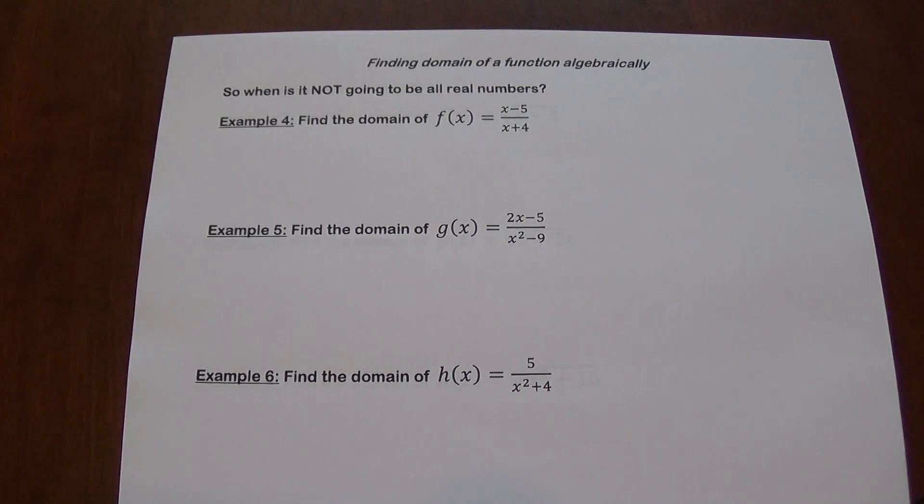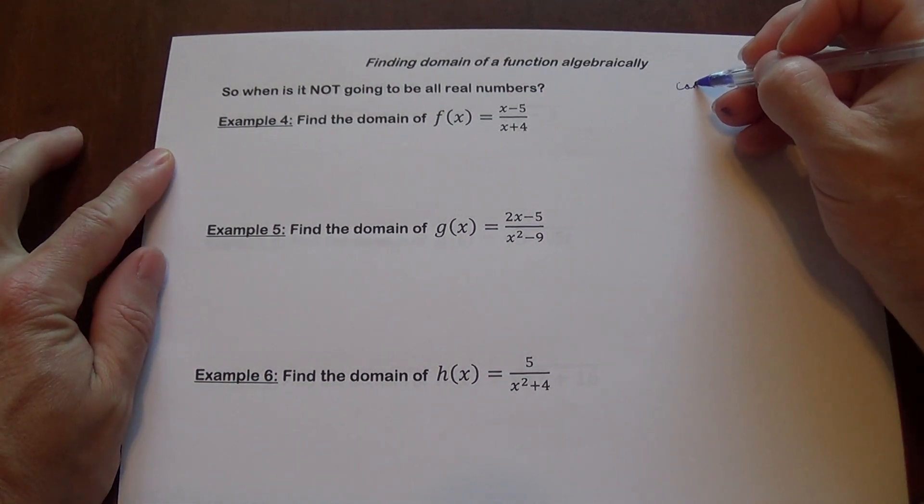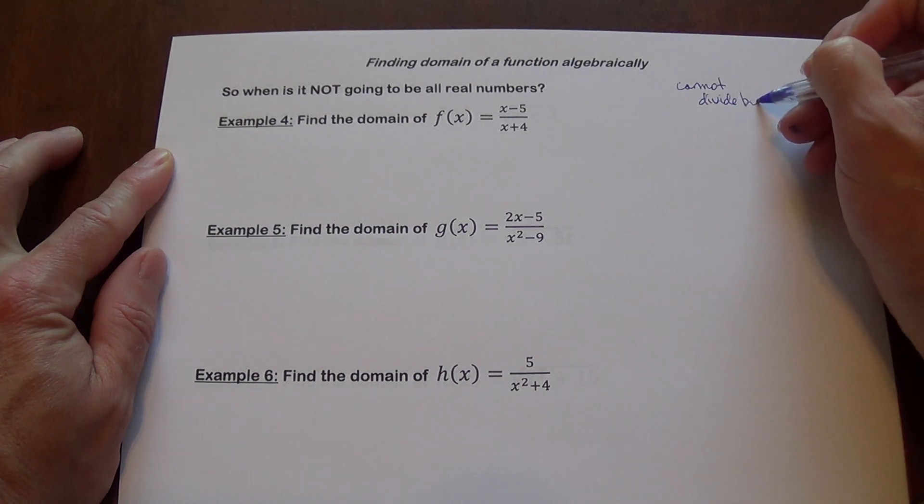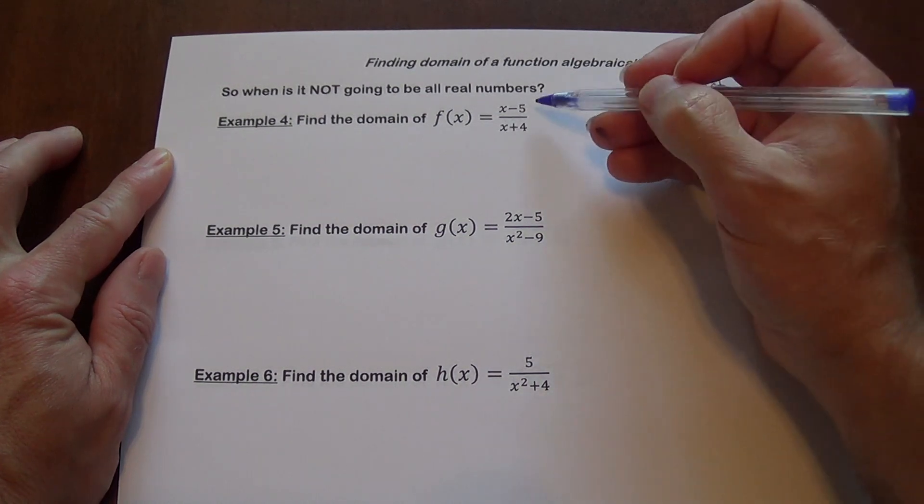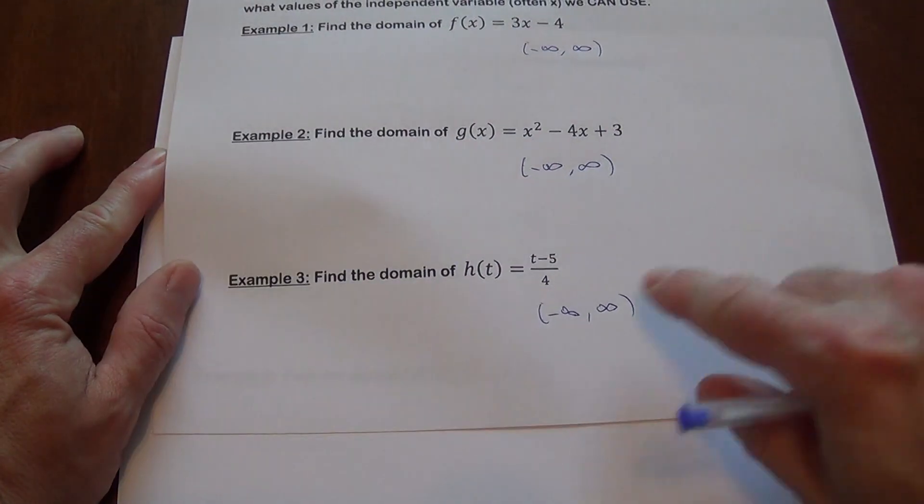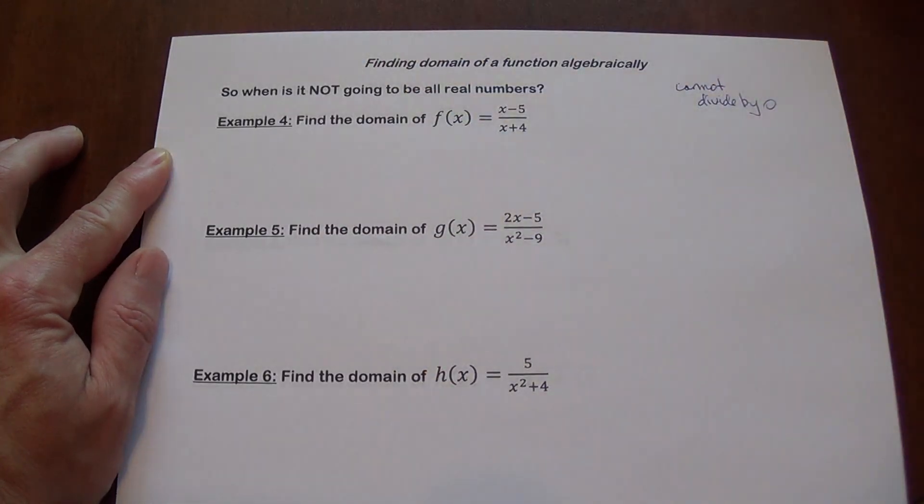Let's take a look at this. So is it sometimes not going to be all real numbers? Absolutely. What are the problems that you could potentially have? One of the problems is division. Remember, you cannot divide by zero. So we cannot divide by zero. Then every time you see division, you should be concerned. But I want to show you this really quick. We divide it here, but it's 4. 4 is a constant, so there's no problem here. But here we have a variable.